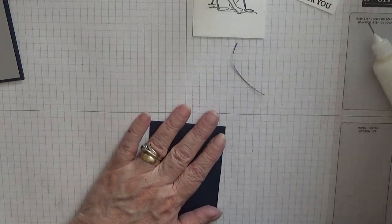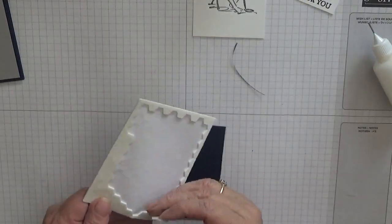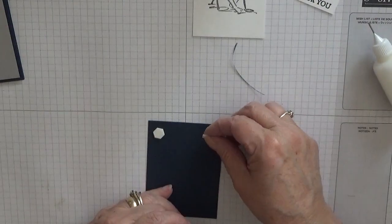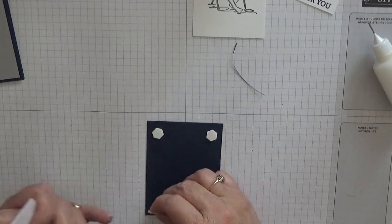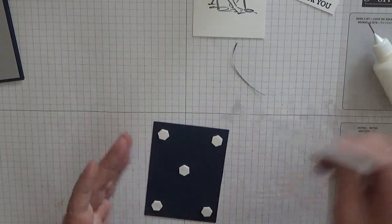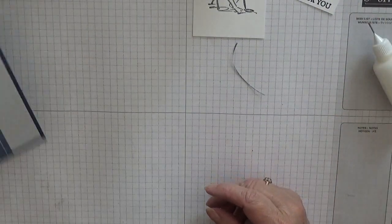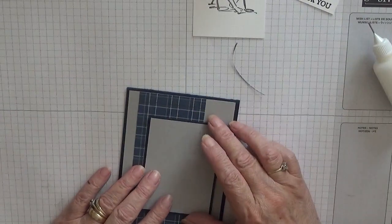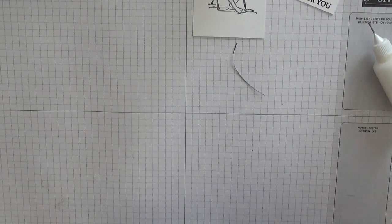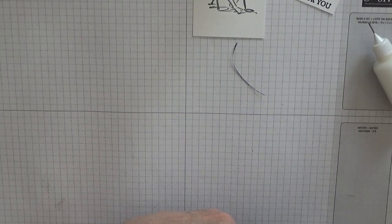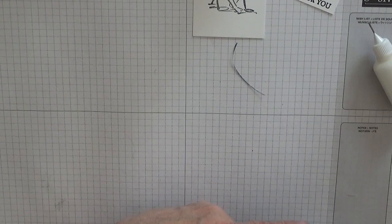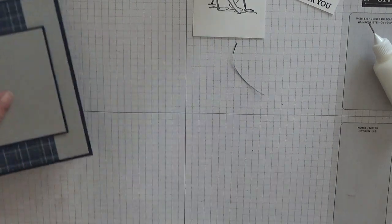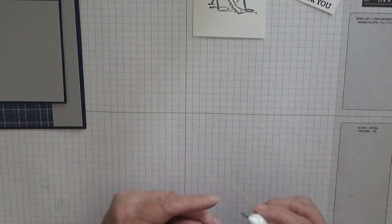And then we might as well put our dimensionals on top of this, so one in each corner and one in the middle. That will sit on there once we've put the white piece on. I've got a frayed bit there. Put the lid on my glue.